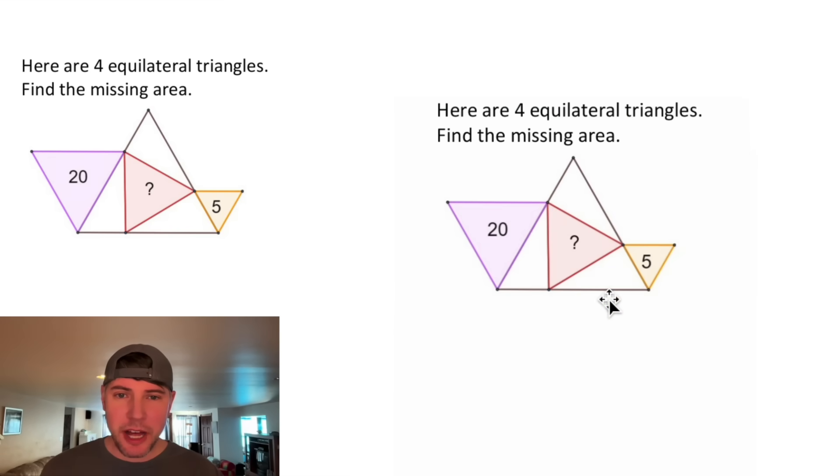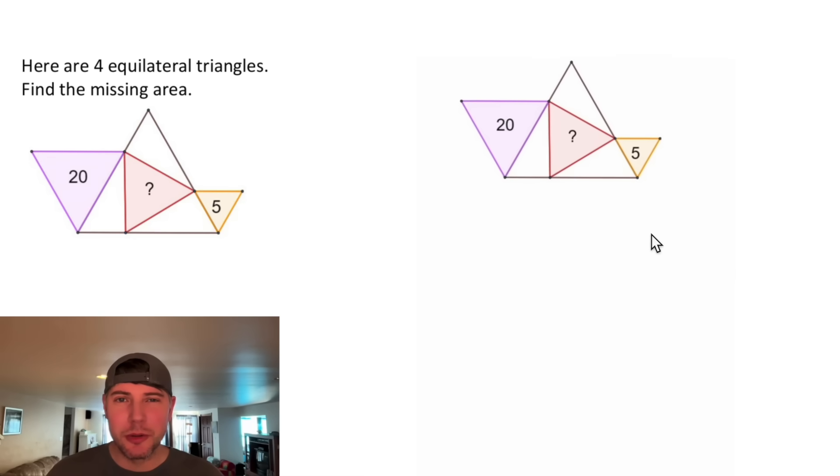It says here are four equilateral triangles, find the missing area. We're given the area of this triangle is 20 and the area of this triangle is 5. If you want to try it on your own, pause it right now because I'm going to solve it in 3, 2, 1.